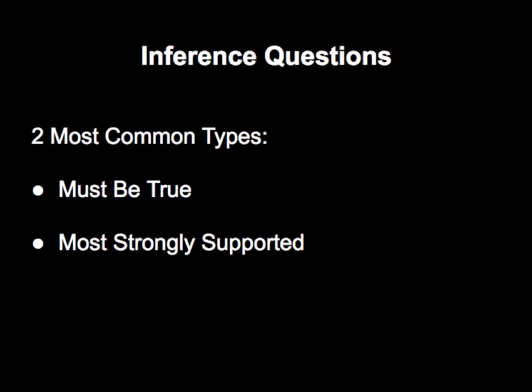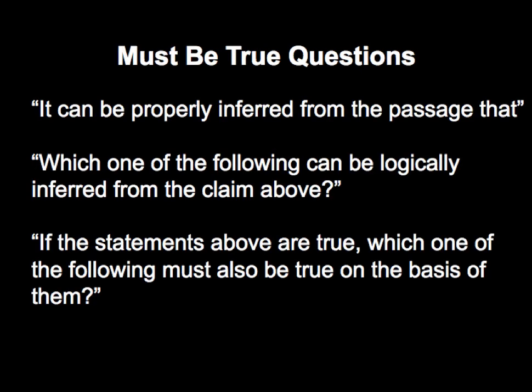There are two main kinds of inference questions: must-be-true and most strongly supported. For must-be-true questions, you want to look for connections in the stimulus. If nothing jumps out in the answer choices, use process of elimination. And if you see multiple conditionals, diagram.